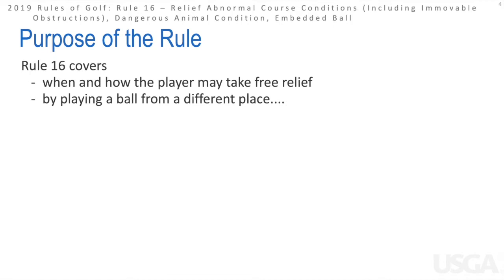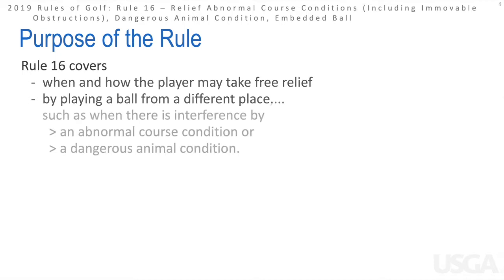The purpose of Rule 16 is to cover when and how the player can take relief by playing a ball from a different place than where their ball lies. This can come up if they have interference from an abnormal course condition, or it could be a situation where there is a dangerous animal condition.